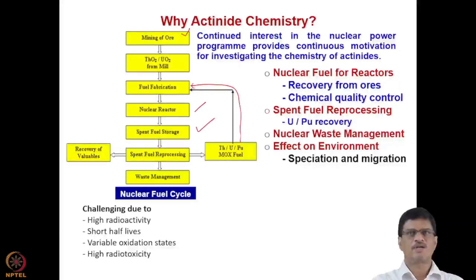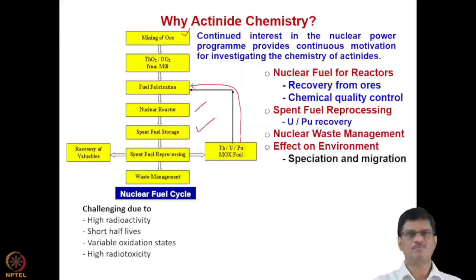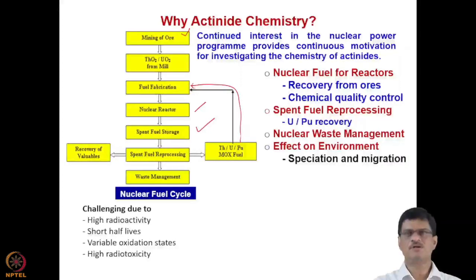The chemistry of actinides is very important because of its application in nuclear reactors. After nuclear reactor operation, the fuel is removed from the reactor core and undergoes spent fuel reprocessing — there also the chemistry of actinides is important, where uranium and plutonium are recovered using a process called the PUREX process, which will be discussed in greater detail in a subsequent lecture.